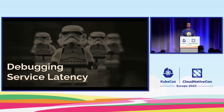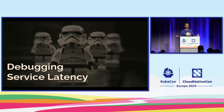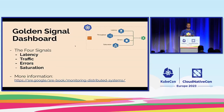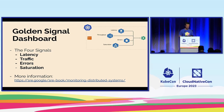Last example: debugging service latency. Service latency is — let's say you have deployed an application and it's not performing as fast as it should be. How are you troubleshooting this? How are you even identifying this? There is a best practice called the Golden Signal Dashboard, invented by the Google SRE team. It's a standard way of monitoring your infrastructure, specifically for services that are publicly available.